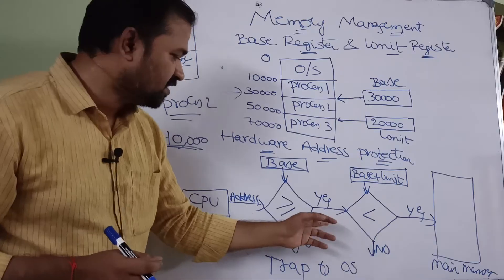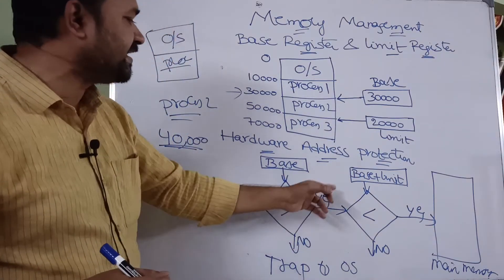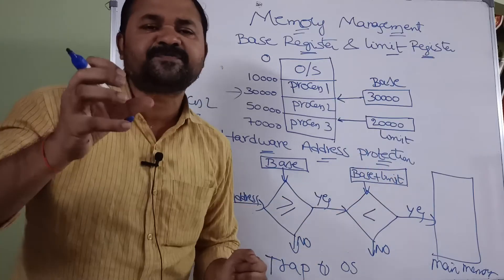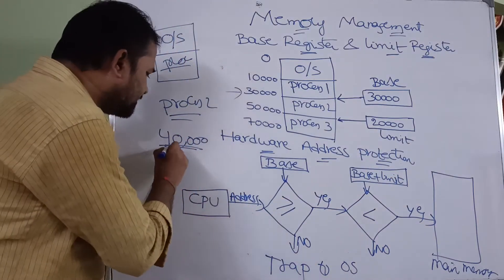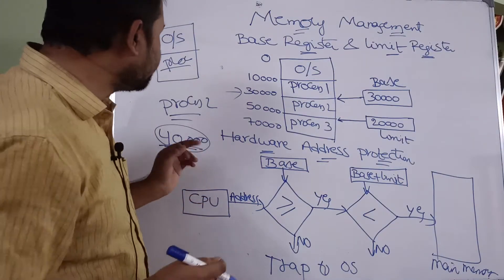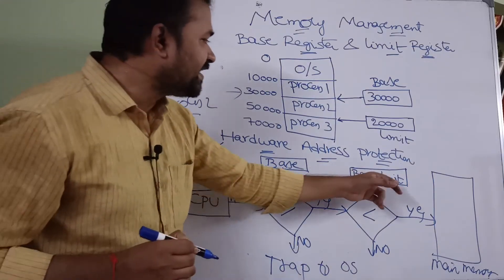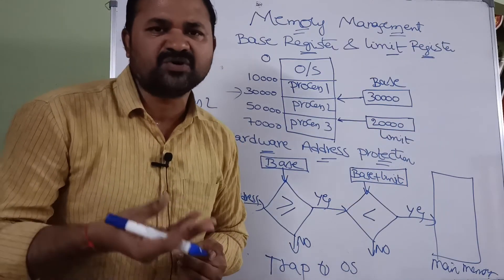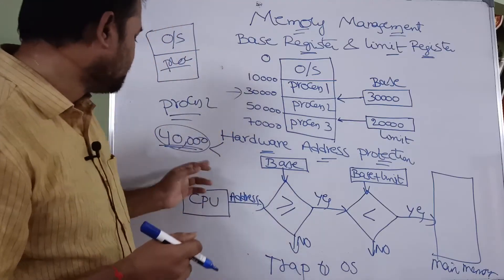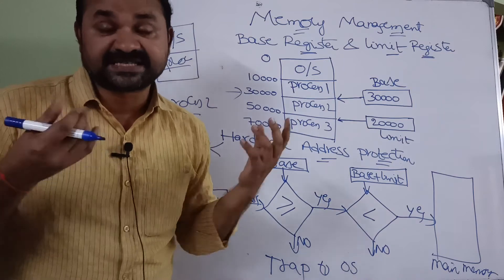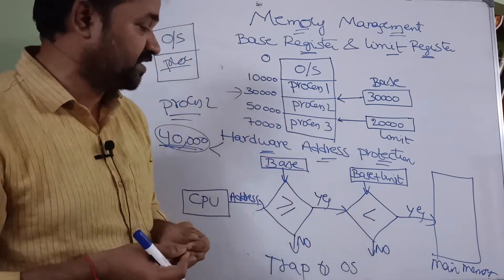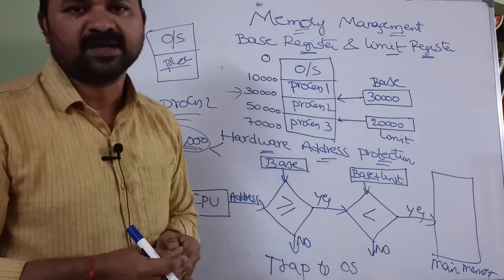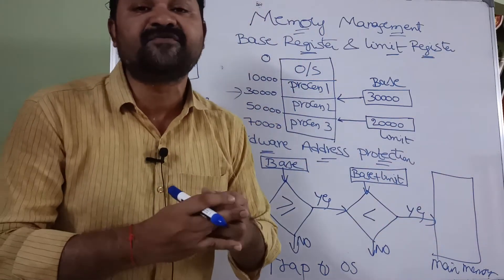Next, we check whether the CPU-generated address is less than base plus limit. Here the base is 30,000 and the limit is 20,000, so base plus limit equals 50,000. Since 40,000 is less than 50,000, the condition is true — it is a valid instruction. The corresponding instruction will then be fetched and executed from main memory.